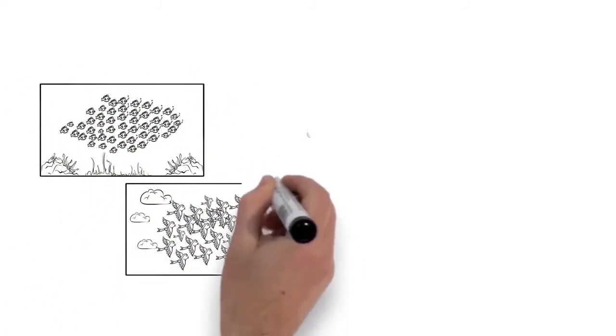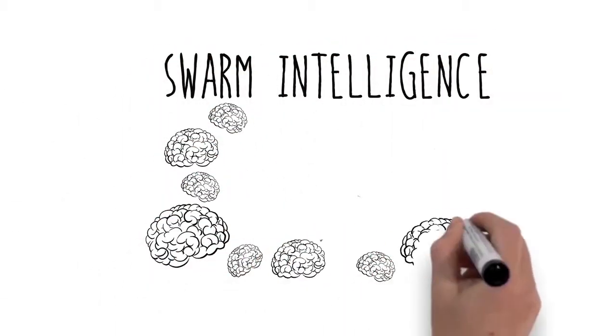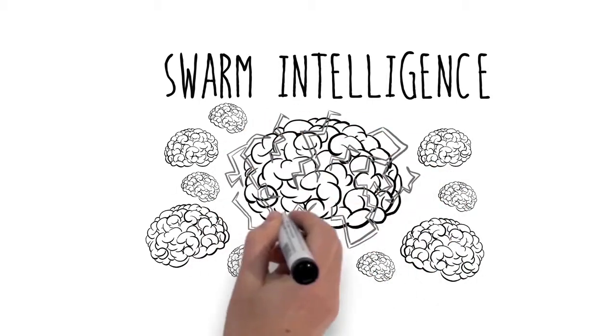They do this because the groups are smarter when thinking together than the individuals would be on their own. Scientists call this swarm intelligence and it combines the power of many minds into one.